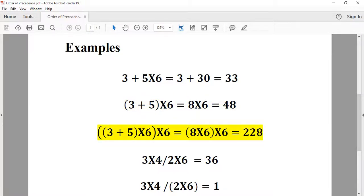3 plus 5 inside parentheses, times 6, all inside parentheses, times 6. First, we finish the parentheses from inside to outside, so 3 plus 5 equals 8, 8 times 6 equals 48, all times 6 equals 228.